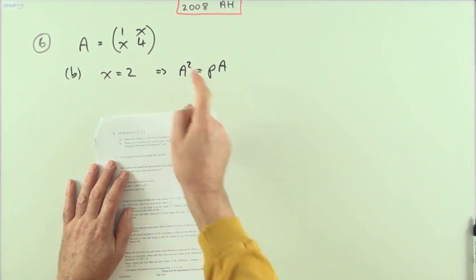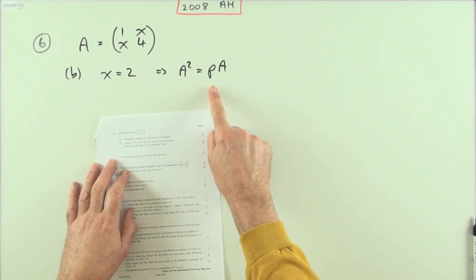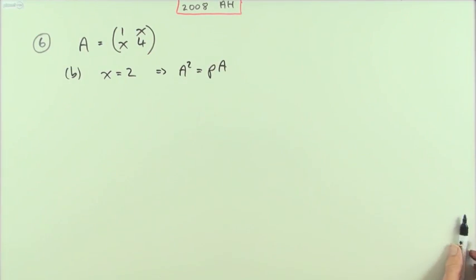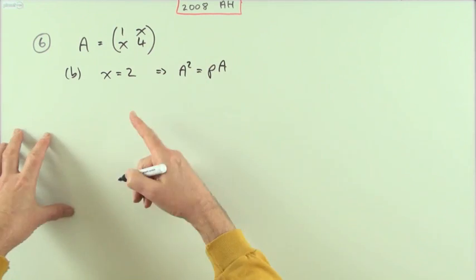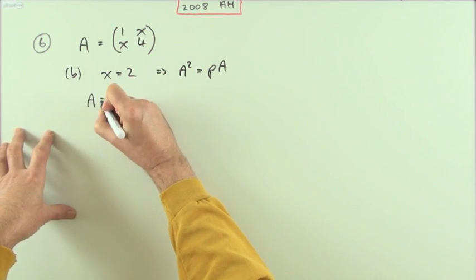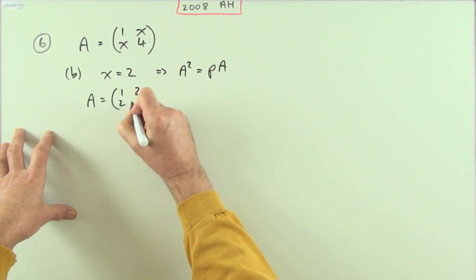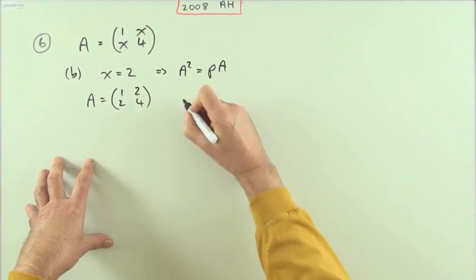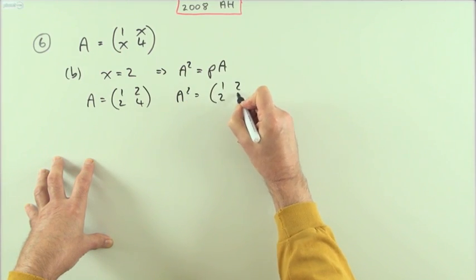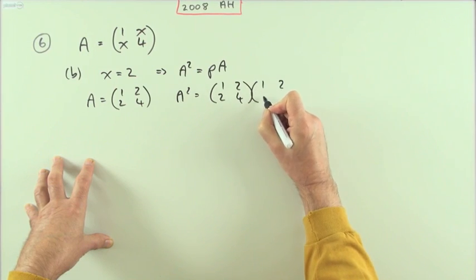Part B: when x is two, show that the square of the matrix is simply some multiple of the original matrix. When x is two, that means A is going to equal (1 2; 2 4), and that means that A squared will be the product of the matrix with itself.